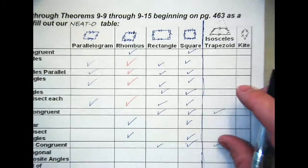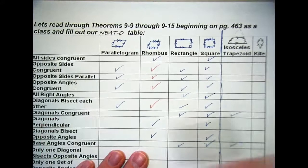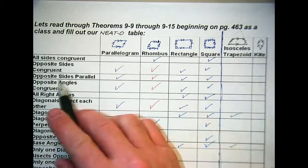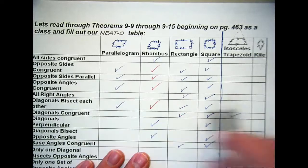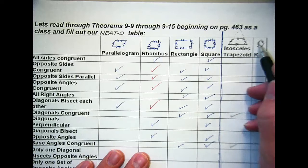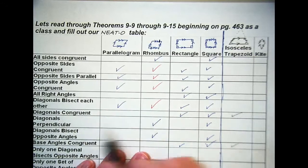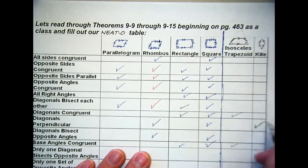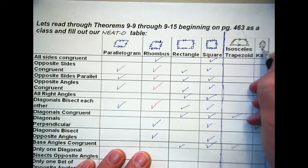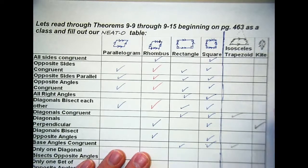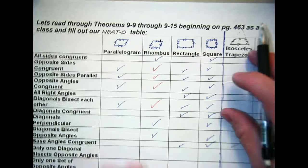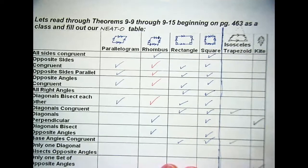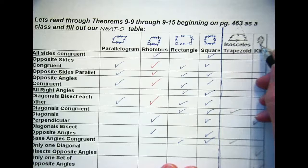Some properties of a kite. All sides congruent? Nope. Opposite sides congruent? Nope. Opposite sides parallel? No. Opposite angles congruent? No. All right angles? No. Diagonals bisect each other? No. Diagonals congruent? No. Diagonals perpendicular? Diagonals are perpendicular. Yes, that's one of our properties there. Diagonals are perpendicular, they cut at right angles. Opposite angles are not congruent? Not this one and this one. However, this one and this one, so one set of opposite angles are congruent. In fact, that's down here. Only one diagonal bisects opposite angles, that one works.